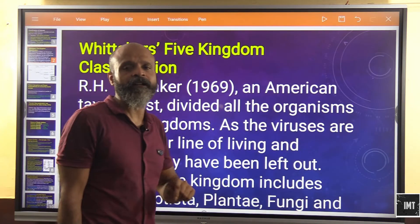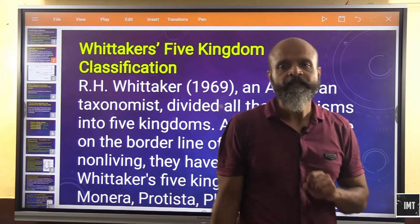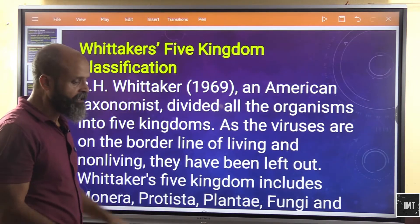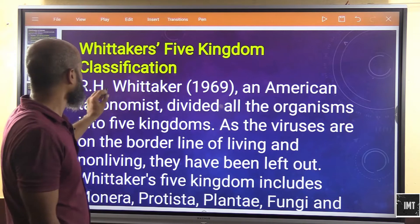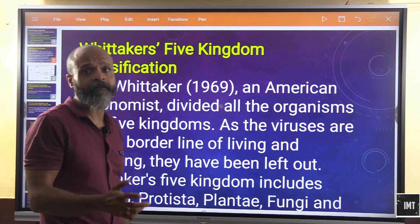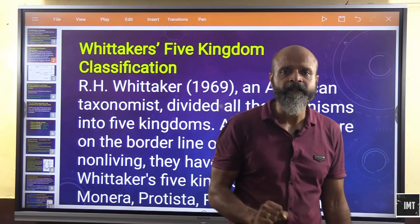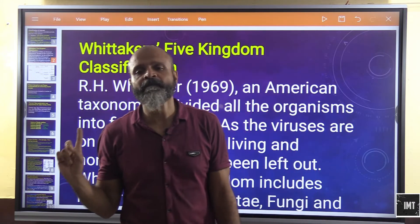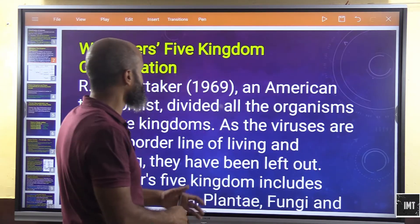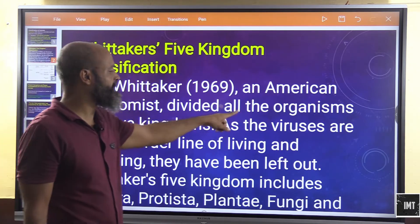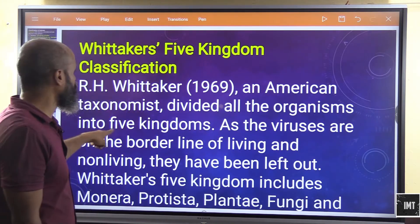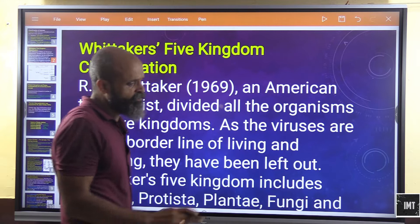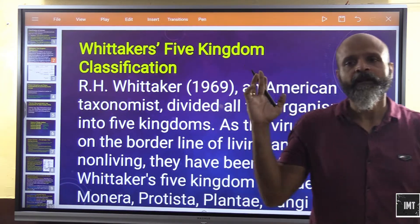The most significant classification is Whittaker's five-kingdom classification, which we have studied in previous standards. Whittaker made an attempt at classifying organisms, and this was the most accepted classification to date. It was made in 1969 by an American taxonomist who divided all organisms into five kingdoms. Viruses, being on the borderline of living and non-living, were left out.